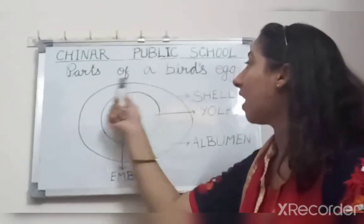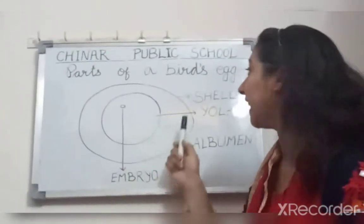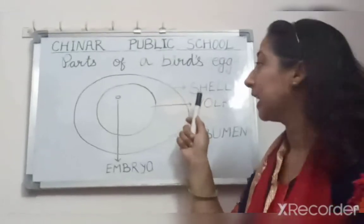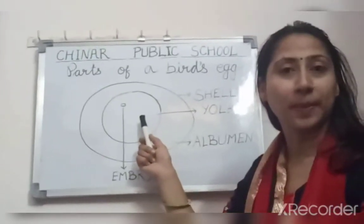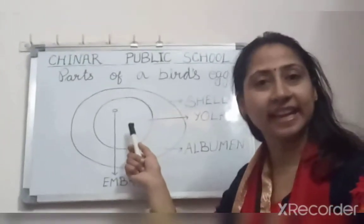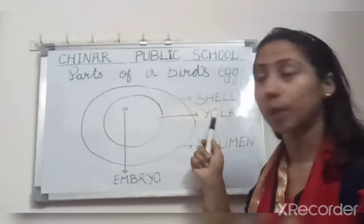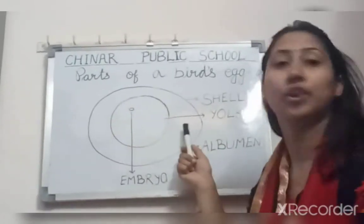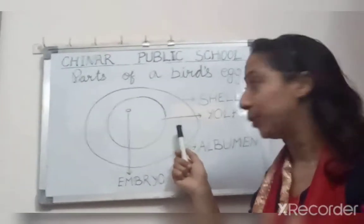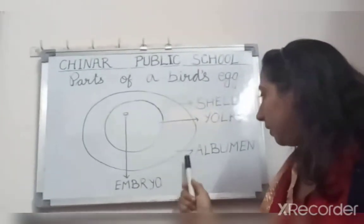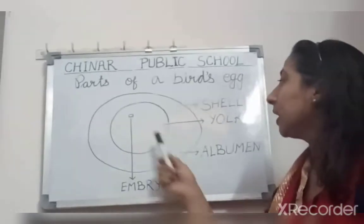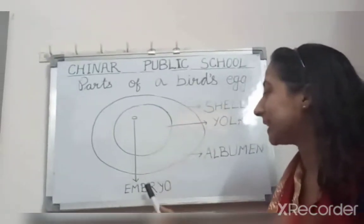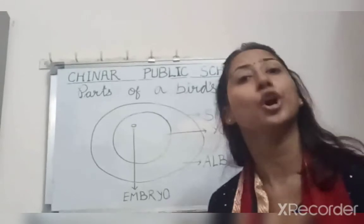The hard outer covering of an egg is called a shell. The yellow center part inside an egg is the yolk, which is surrounded by a white watery substance called albumen. The white spot you can see in the yolk is the embryo.